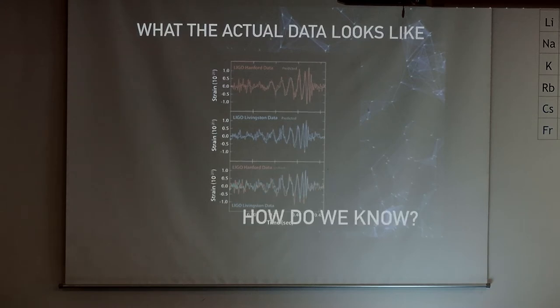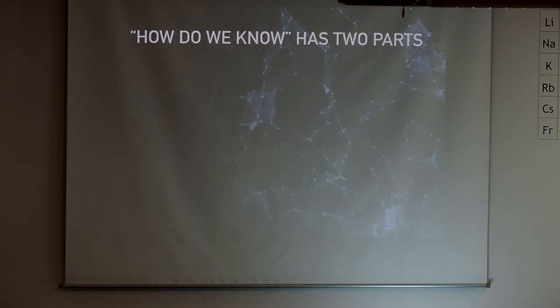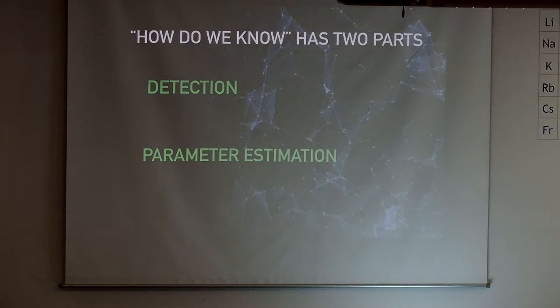The question is how do we know from this data that the narrative behind it is the two black holes. This 'how do we know' has two parts. One of them is detection, so we need to make sure that this is actually a gravitational wave. And also very importantly to understand these black holes in detail is parameter estimation - how can we compute the parameters of the black holes that are merging.